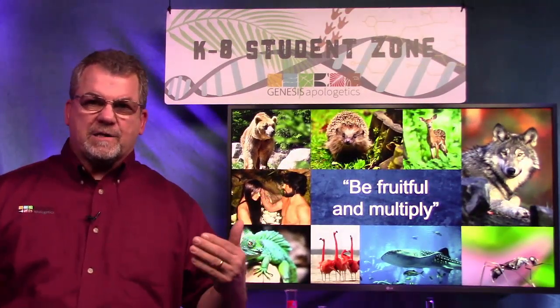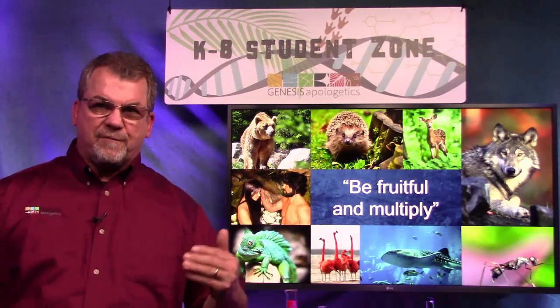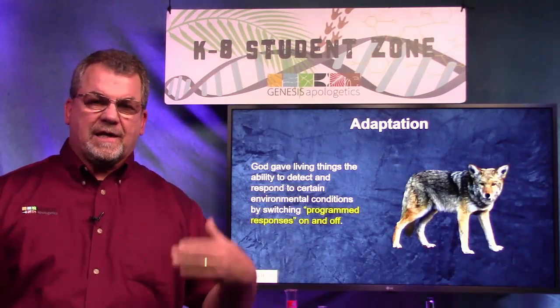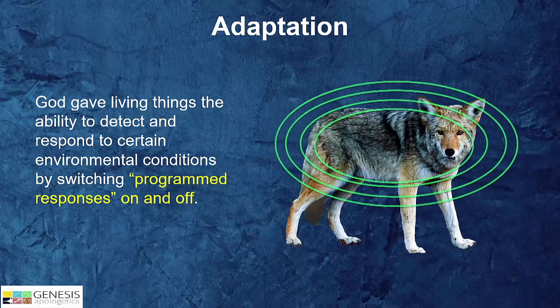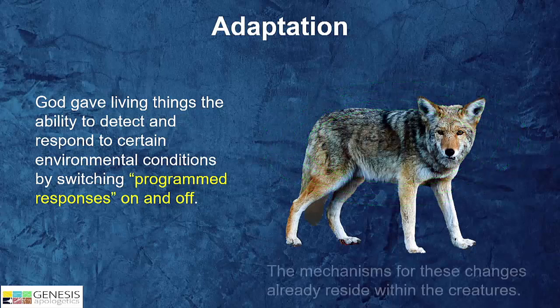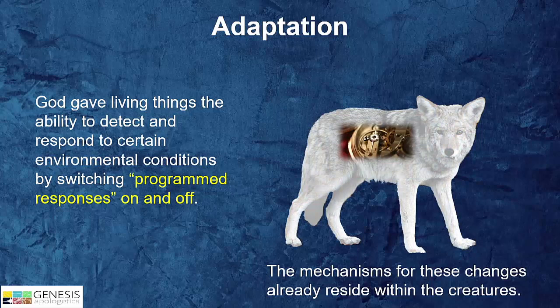In the first nine chapters of Genesis, God commanded his creatures five times to be fruitful and multiply. And to help them do that, God gave living creatures the ability to adapt. Living creatures have the ability to detect certain changes in the environment and then switch on and off programmed responses. The important thing to remember is that the mechanisms for implementing these changes are already within the creature.